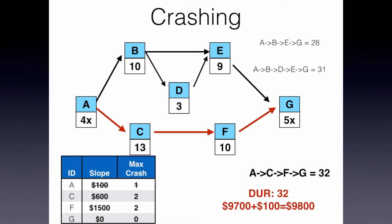Adding up all the values, everything has been reduced by 1: A-B-E-G is now 28 days, A-B-D-E-G is 31 days, and A-C-F-G is 32 days. So I still need to reduce something on the path A-C-F-G, remembering that A can no longer be crashed and G cannot be crashed. It looks like I'm going to be crashing task C — reducing that by 1 and adding $600 to my overall costs. I don't put an X after it because I can still reduce it by one more should I desire to.